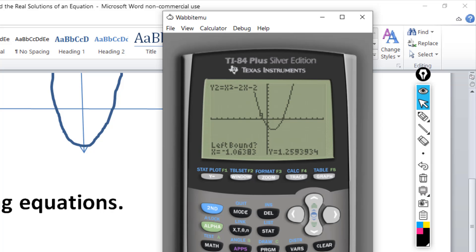So hit enter. Now notice the lower left is asking for a right bound. So move the cursor past that point. Hit enter. Now it wants a guess. You can ignore that and hit enter.